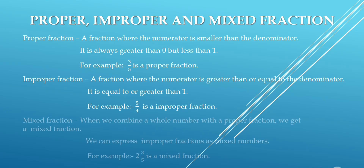Mixed fraction: when we combine a whole number with a proper fraction, we get a mixed fraction. We can express improper fractions as mixed numbers. For example, 2 whole 3 upon 5 is a mixed fraction.